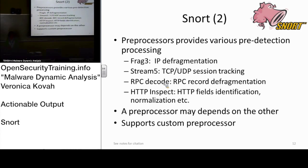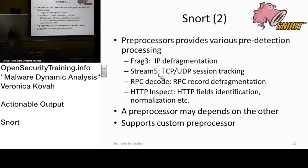If traffic is not HTTP, then it will not go to the RPC decoder. However, it is configurable — you can specify which port maps to which application decoder. Some preprocessors depend on others. For example, HTTP inspect cannot run by itself without the TCP segmentation from STREAM5. You need to have those segments reassembled before passing them to the higher level decoder.